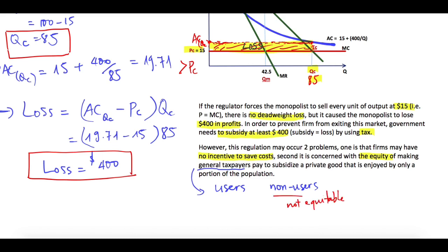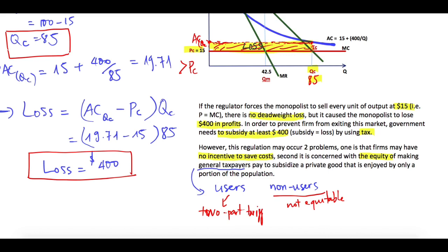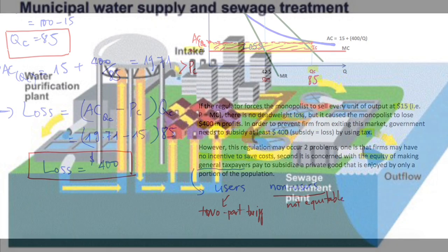Non-users should not have to subsidize a good they don't consume at all. To solve this problem, the government has a second strategy: the two-part tariff, so that only users of the service have to subsidize for this loss.